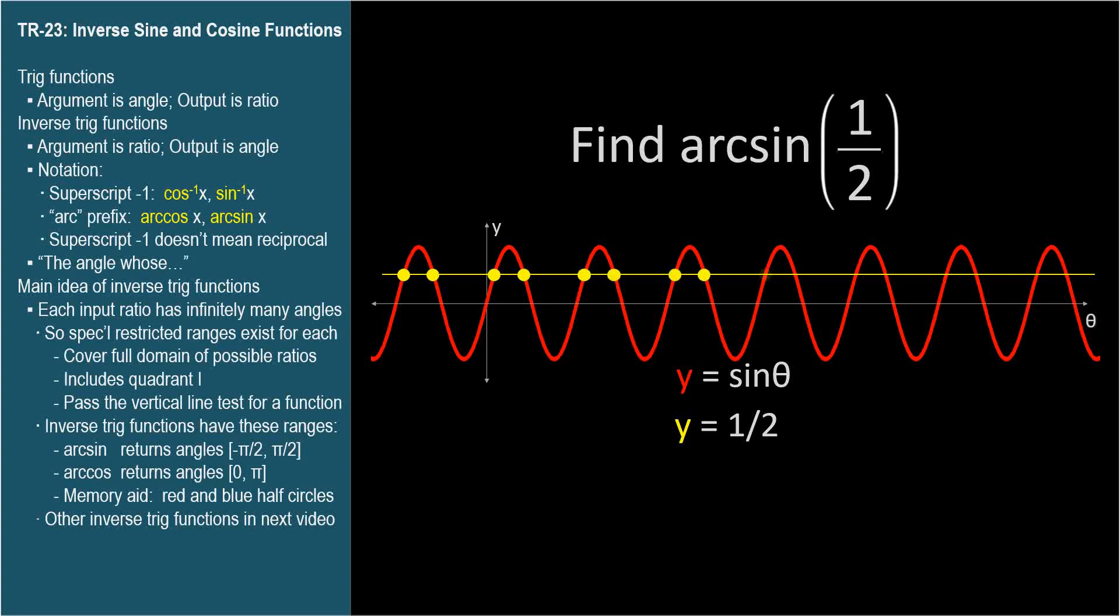As it turns out, we have a lot of choices. There are an infinite number of angles whose sine is 1 half. I'm showing 16 of them right here. But of course they extend infinitely in both directions. But arc sine is supposed to be a function. And functions must return only one value for each argument. So we have a conundrum.